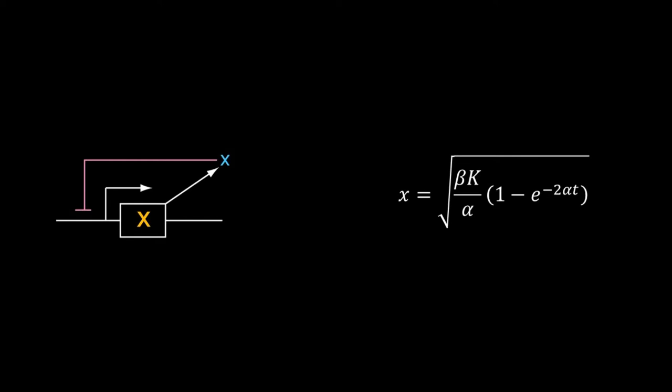You can easily do the integration to solve this ODE. The solution is: x = √(βK/α) × (1 - e^(-2αt)).